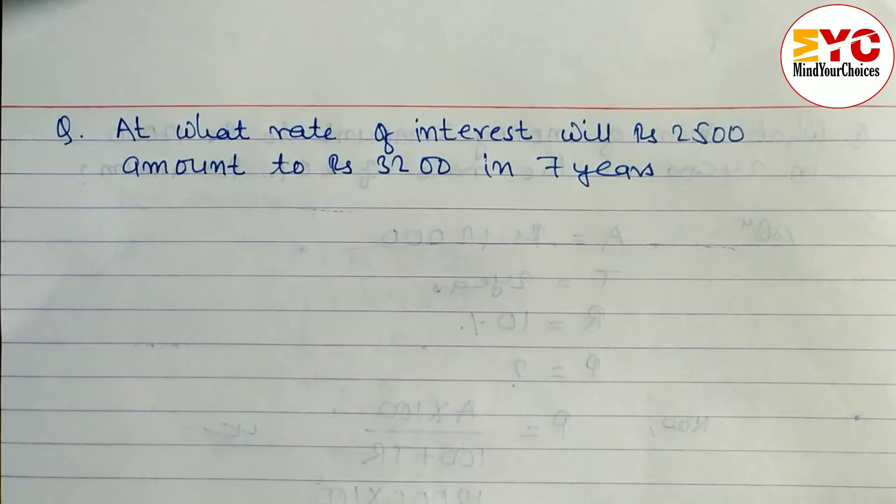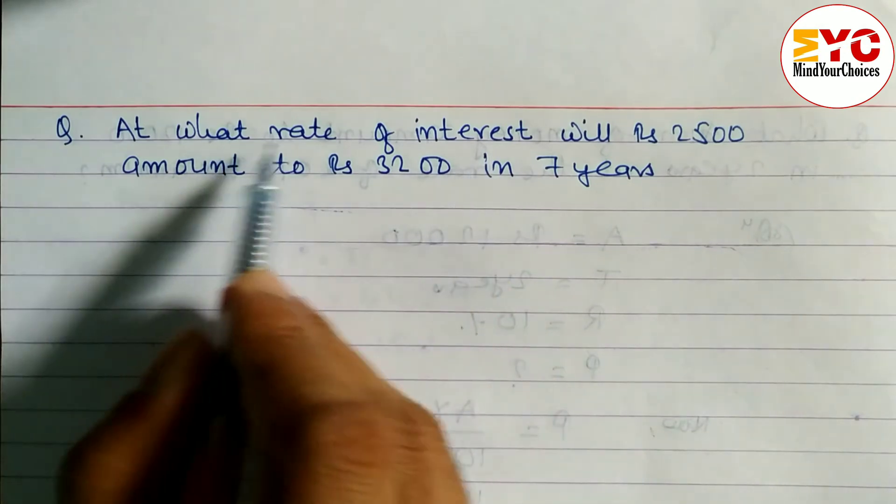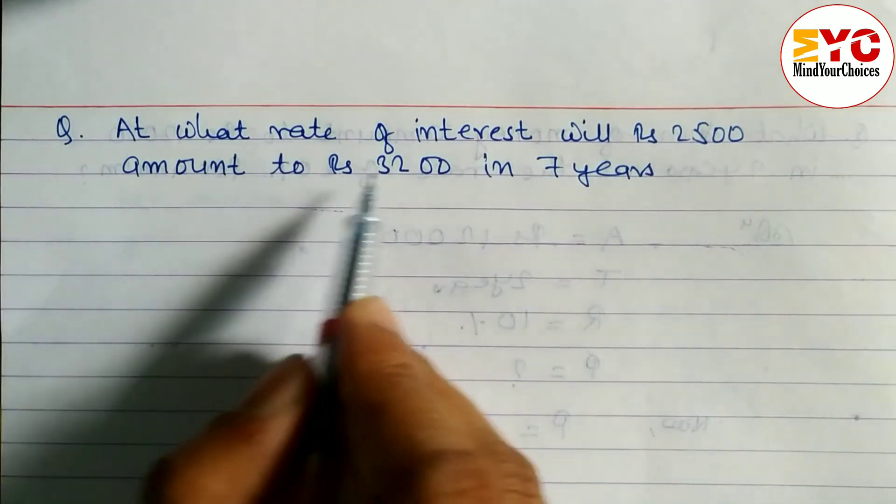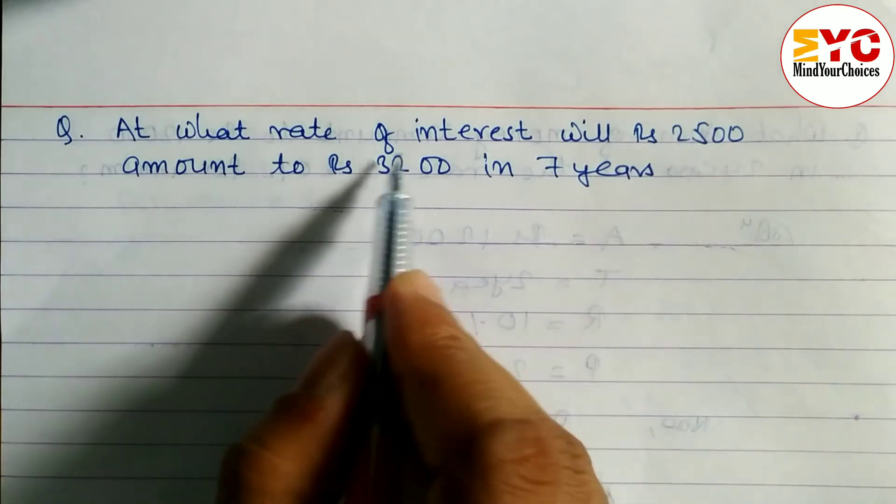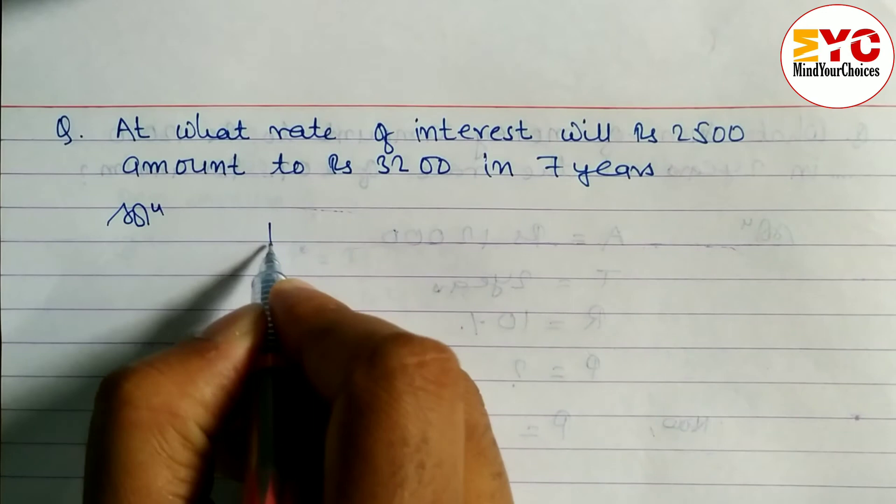This question is taken from simple interest. We have a question: at what rate of interest will rupees 2500 amount to rupees 3200 in 7 years? This is the principle, amount is this, and time is 7 years.